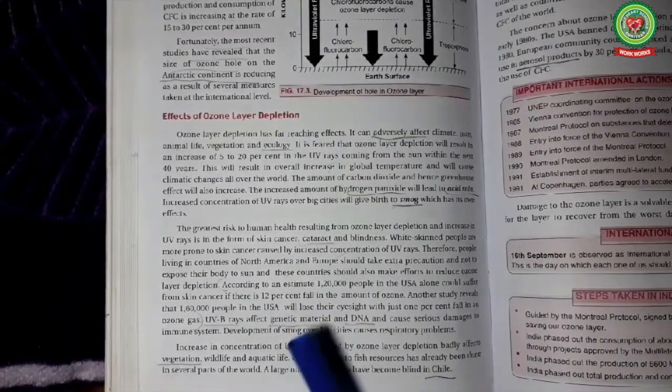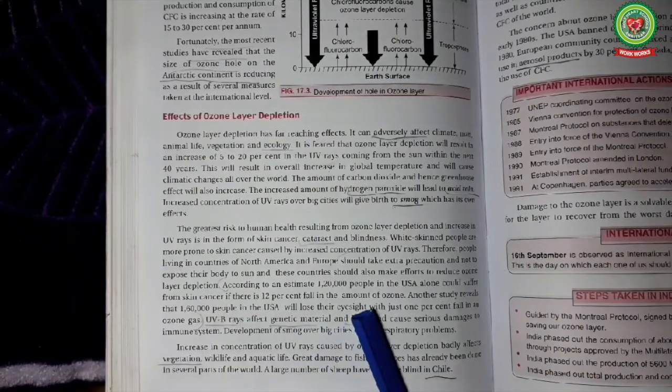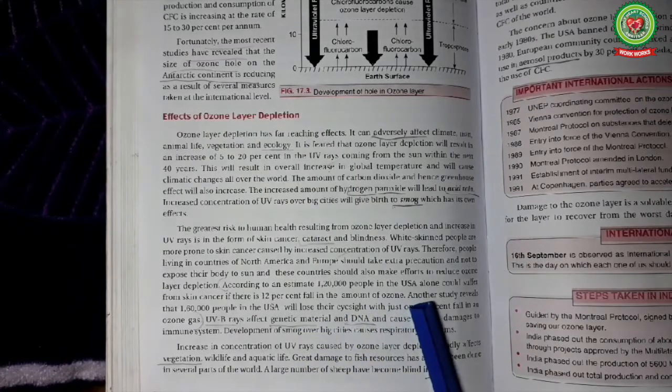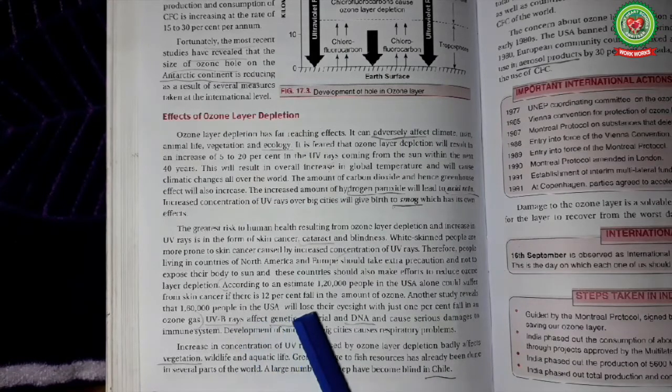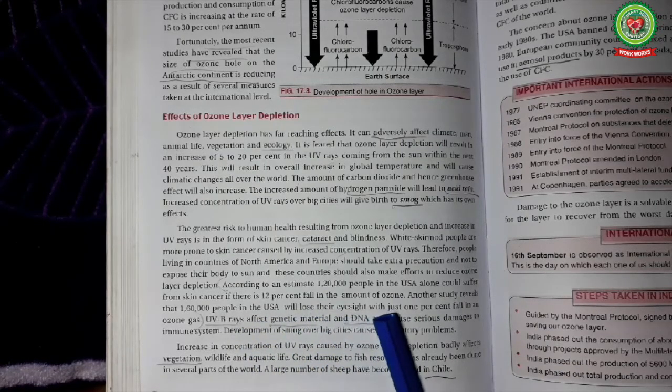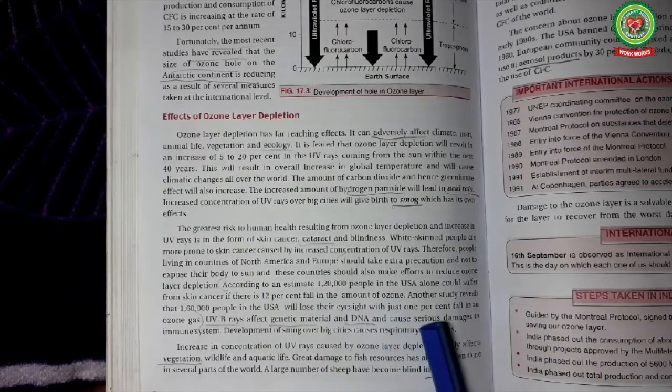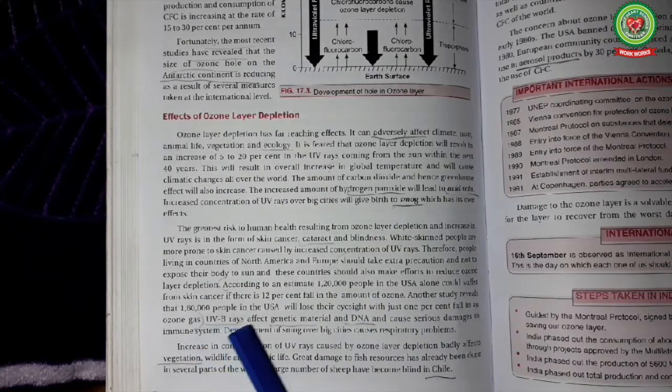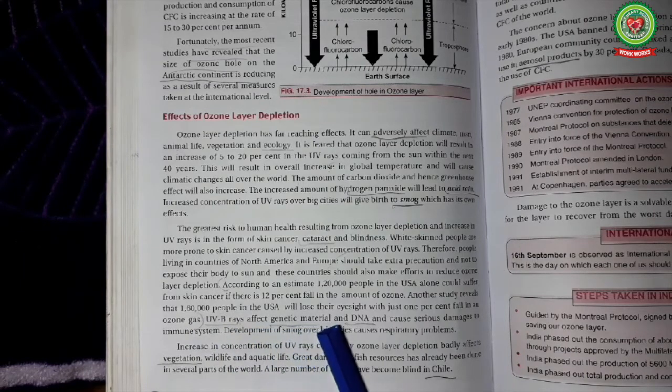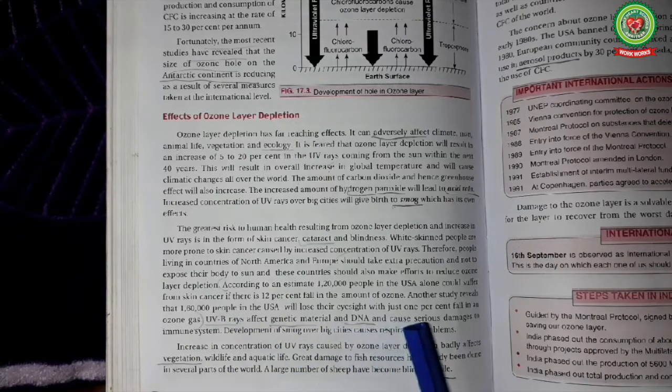According to an estimate, 1,20,000 people in USA alone could suffer from skin cancer if there is 12% fall in the amount of ozone. Another study reveals that 1,60,000 people in USA will lose their eyesight with just 1% fall in the ozone gas.